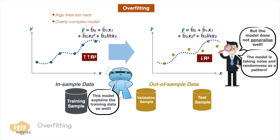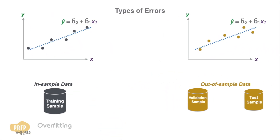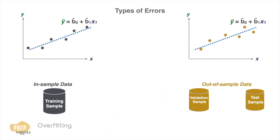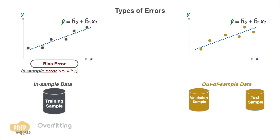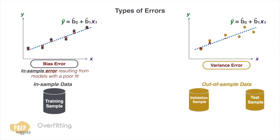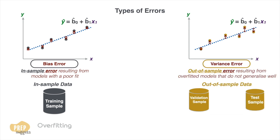To measure how well a model generalises, data scientists study three types of errors. Bias error is the in-sample error resulting from models with a poor fit. Variance error is the out-of-sample error resulting from overfitted models that do not generalise well. And base errors are residual errors due to random noise.